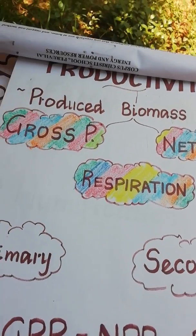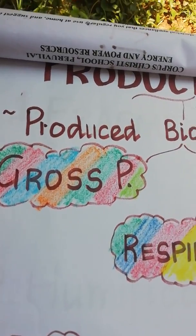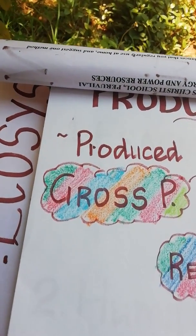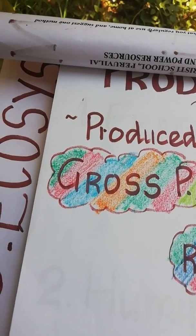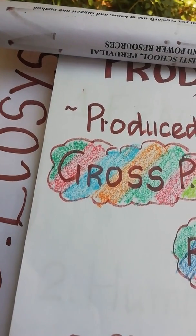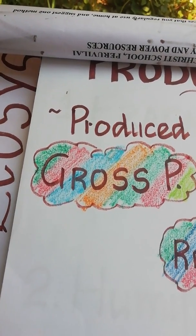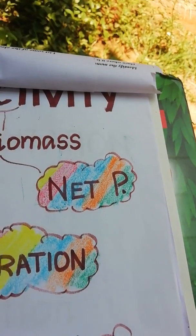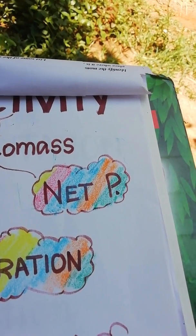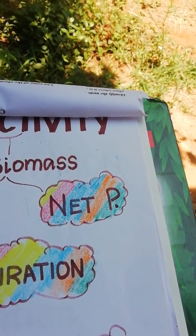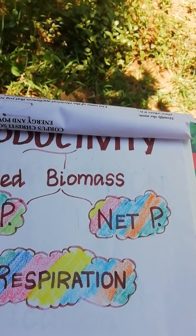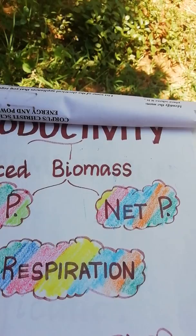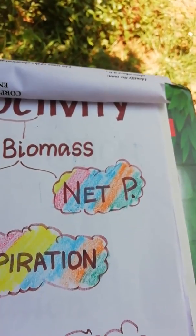You can see the gross productivity and net productivity. Gross productivity means total energy — how much radiant energy is being fixed in the organism. That is gross productivity. It shows a rough calculation of how much biomass has been added. Net productivity is how much energy is being expended, being used by the organism. There will be expenditure. If you reduce the expenditure from gross productivity, you will get net productivity.